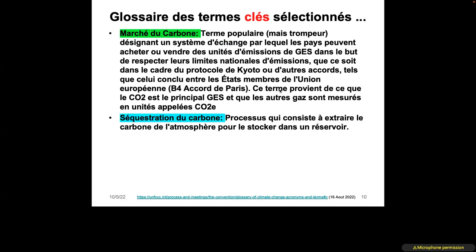Carbon sequestration is the process that consists of extracting carbon from the atmosphere and storing it in a reservoir. This reservoir can be a tree or the ground, depending on the case. When we capture a greenhouse gas from the atmosphere and collect it somewhere — whether in the ground or when a tree naturally absorbs it — we talk about carbon sequestration.